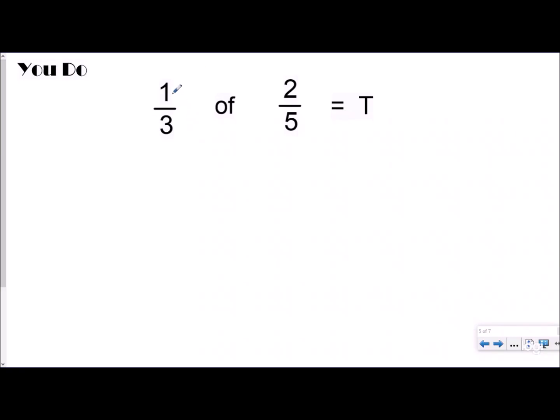Let's check this one out. Pause it, do it yourself, and then push play. We'll solve it together. Step one: both of these are already fractions, so I don't need to do anything. Step two says multiply across, so 1 times 2 is 2, and 3 times 5 is 15. So I know that 2/15 equals T. That's all you have to do. It's that simple. You just multiply across.